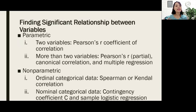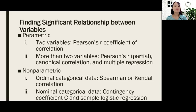For finding significant relationships between variables: when you are finding a relationship between only two variables, we use Pearson's r coefficient of correlation. But when finding significant relationships among more than two variables, we use multiple regression.